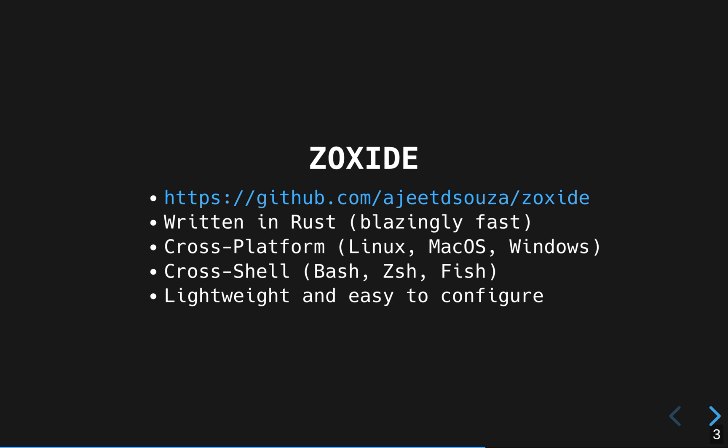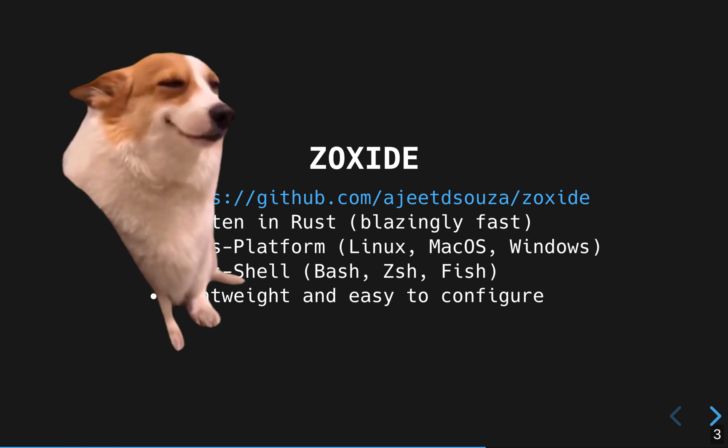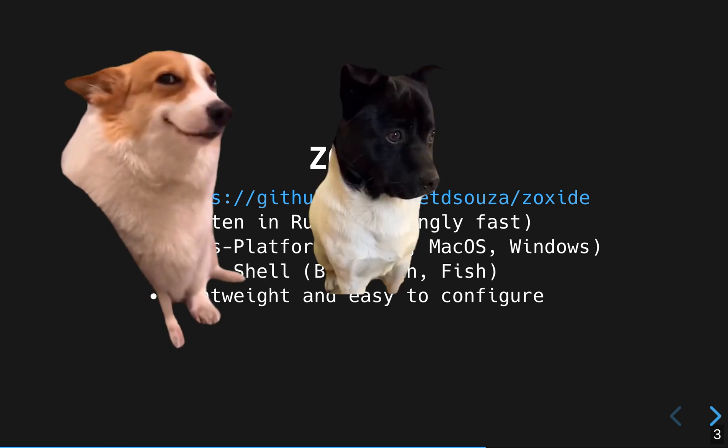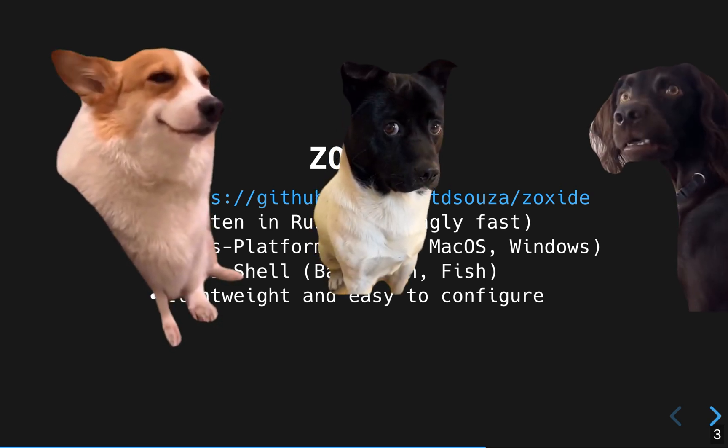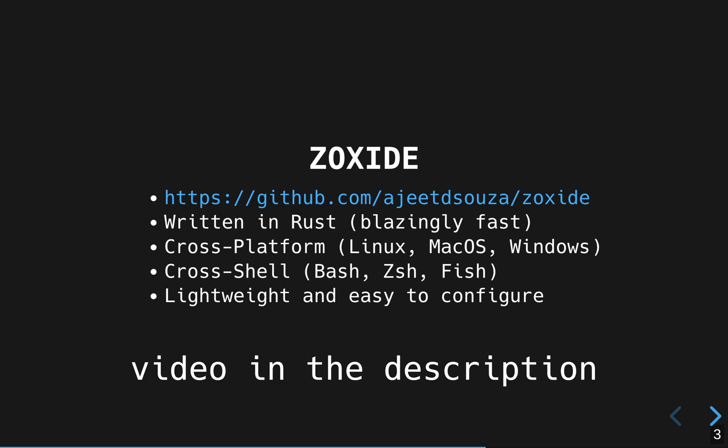Enter Zoxide. Zoxide is a terminal tool written in Rust, so you know it's blazingly fast. It's cross-platform, so you can start using it whether you're using Linux, macOS, or Windows. And you can use it in any shell, just like the previous tool I showed you.